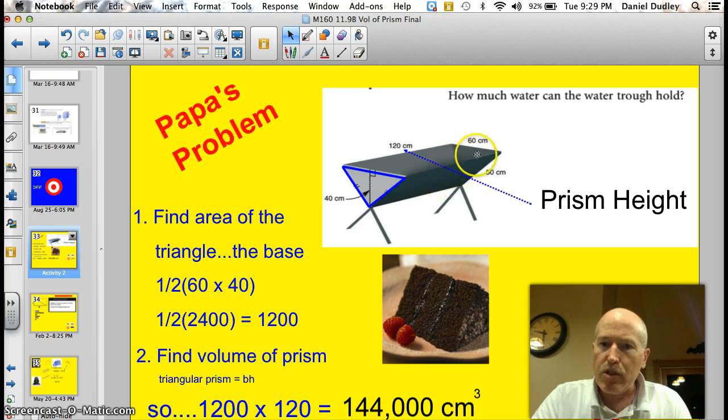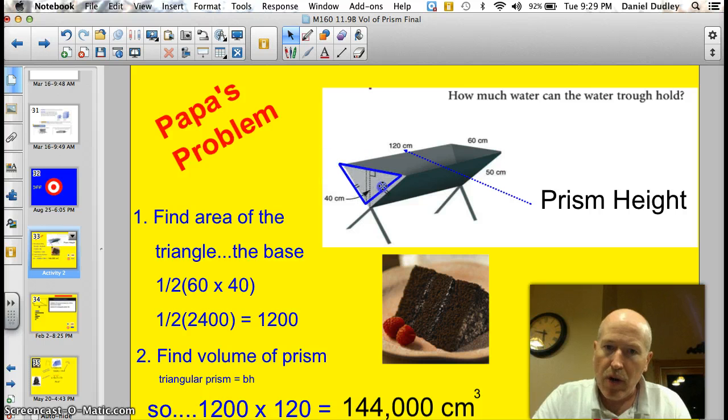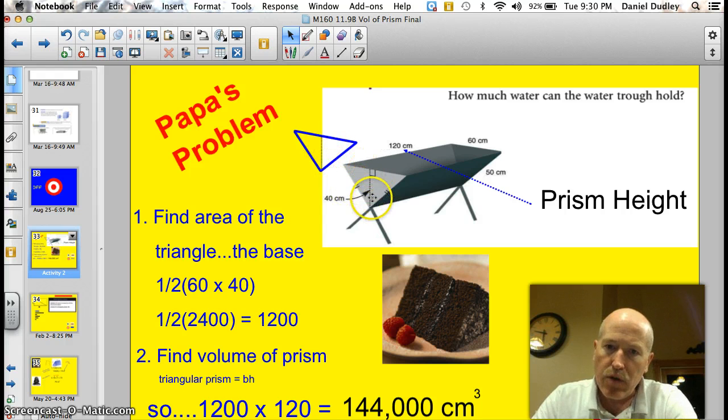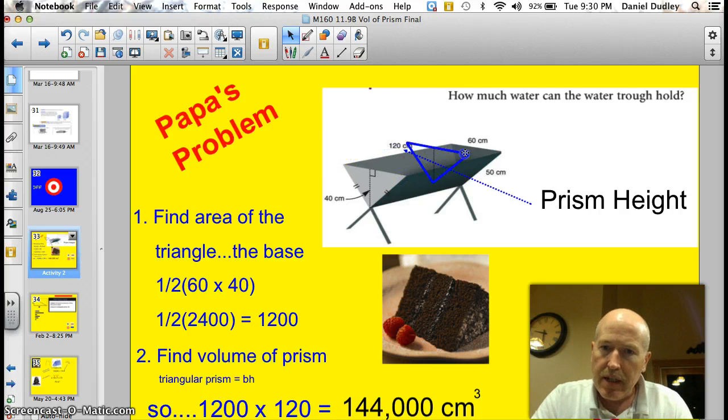Well, this is a triangular prism and we call it a triangular prism because the base here is a triangle and it's three-dimensional. So, if I move this aside, you can see that the actual triangular base, the height of it is 40 centimeters. And the base is 60, so we have a height of 40 and a base of 60.